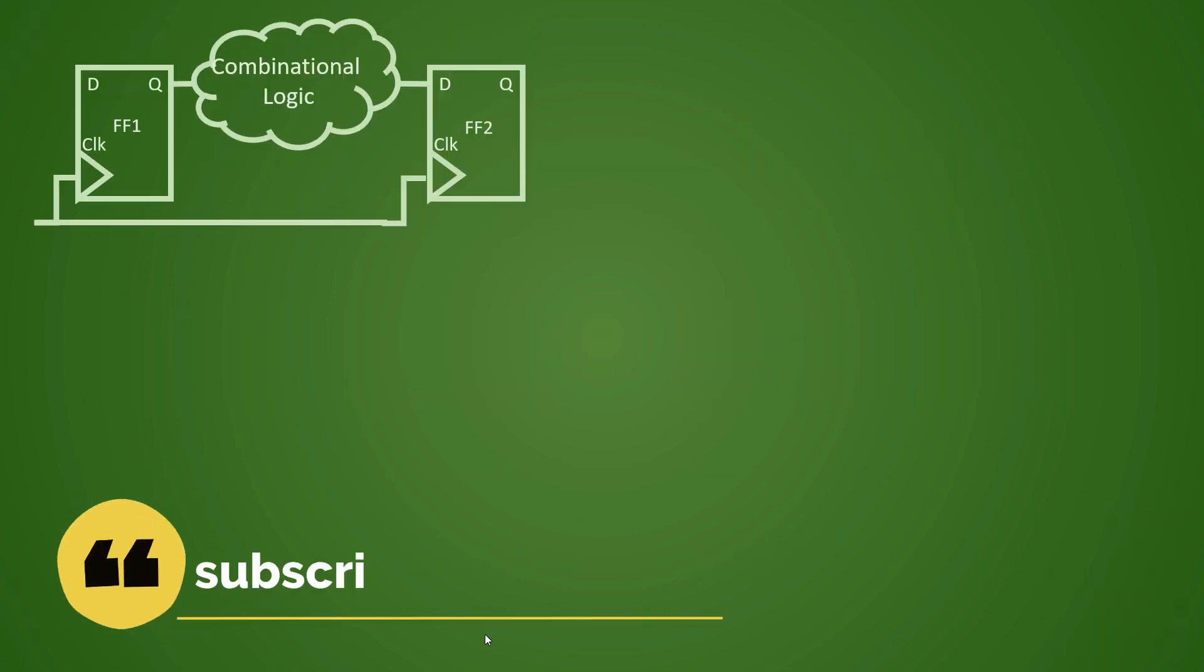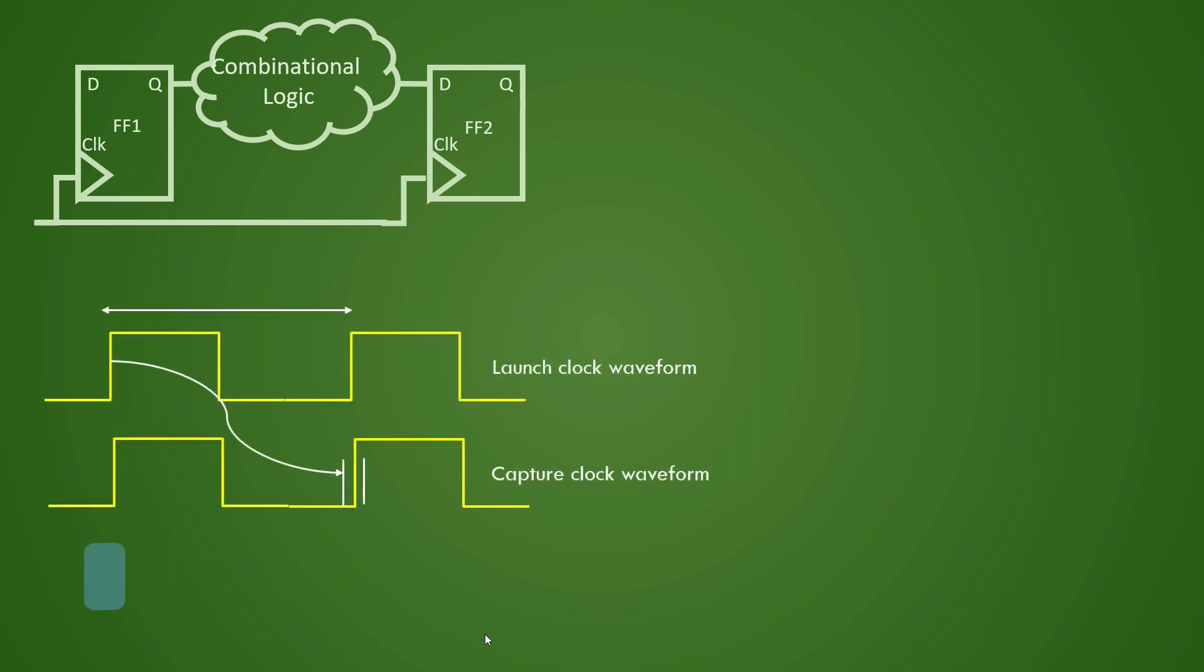If you have watched one of the previous videos then you already have some idea about setup timing or hold timing violations. We have discussed that in our STA series also, link of which is given in the description below. Here is a brief overview that a setup timing violation occurs when your arrival time is greater than the required time, and arrival time is the data path delay.